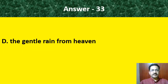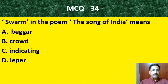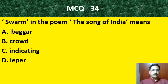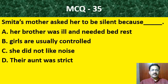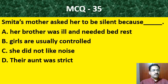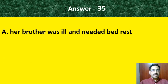MCQ 32: Grandma felt like 'a brief season in hell' as she was — allowed to be on the field, allowed to rest on the tree, confined to bed at home, or not given food. The correct answer is confined to bed at home. MCQ 33: The quality of mercy is compared to — the crown of the majesty, the life of people, gentle rain from heaven. The correct answer is gentle rain from heaven.